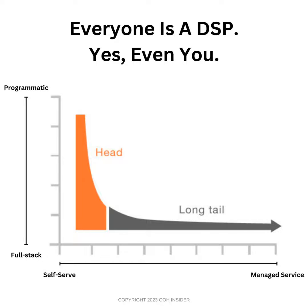So let's start by breaking down what a DSP is and why it's relevant. DSP is short for demand side platform — the literal interface used by marketers to deploy ads. This can be Facebook Ads Manager, Google Ads Manager, or even the Trade Desk or Google's DV360. Simply put, a DSP is how marketers access inventory and run campaigns.